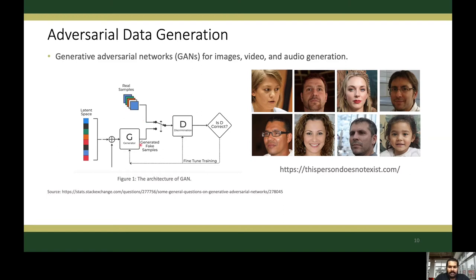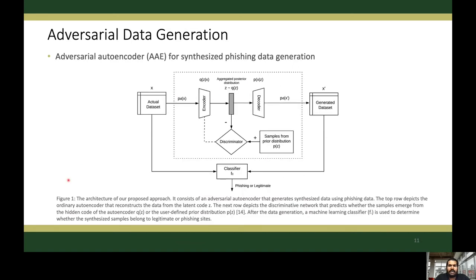The initial GAN architecture only works well for continuous and incomplete data distributions. However, we deal with sparse and discrete data in phishing detection and also many other networking problems. Therefore, we use a generative adversarial network called adversarial autoencoder, which is capable of capturing both continuous and discrete distributions. Here we demonstrate the architecture of the adversarial autoencoder for synthesized phishing data generation. The top row represents the ordinary autoencoder that reconstructs the data from the latent code, which is the aggregated posterior distribution.